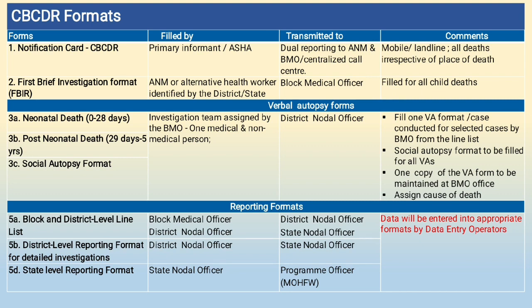This covers the cause of death assignment. Reporting forms include 5A and 5B. Form 5A covers block and district level line lists, Form 5B covers district level reporting format, state level line list, district level reporting format, and state level reporting format. Reports go to the state level officer, program officer, and Ministry of Health and Family Welfare.